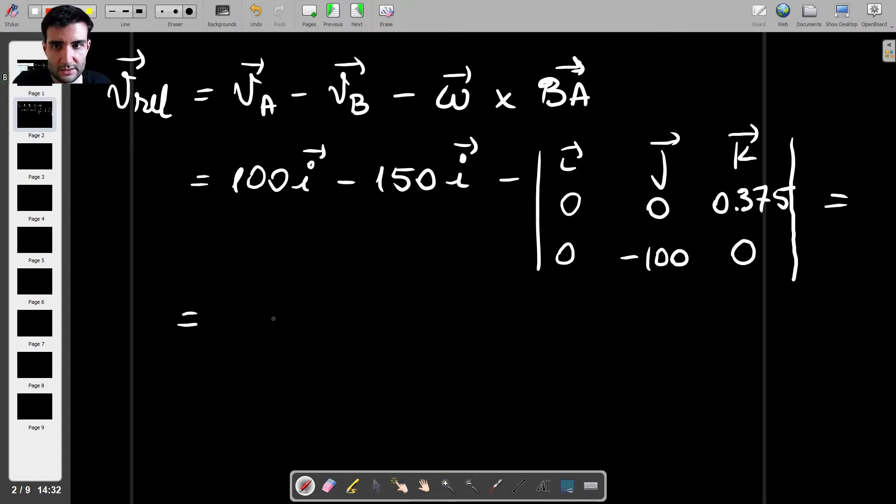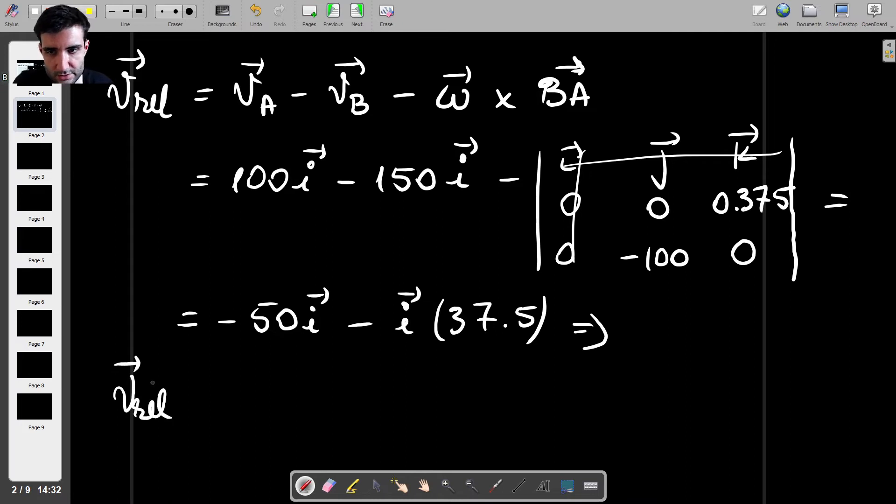So what that gives us is, first of all, minus 50, that's 100 minus 150, minus, and then we have I multiplied with, and this determinant will just be 37.5, which gives us a grand total of, so the relative velocity would be minus 87.5I, and those are meters per second.